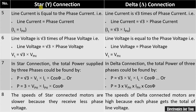In case of star connection, line current is always equal to phase current. Whereas in case of delta connection, line current is equal to root three times the phase current. This is written in equations as shown here.